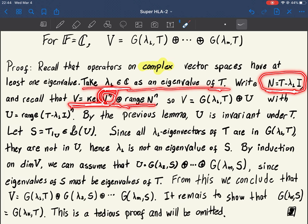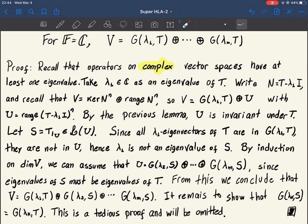So this is the generalized eigenspace and this is, let's call it just U. So defining U to be exactly equal to this. And we know that by the previous lemma U is invariant under T. Why? Because U is the range of some polynomial of our operator T.